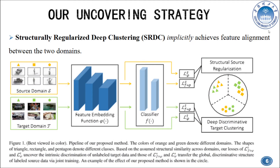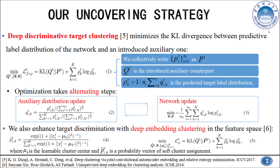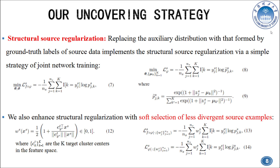We constrain the clustering solutions using structural source regularization that leverages the structural domain similarity assumption. This is the pipeline of our proposed method. It is very simple but effective. Technically, we use a flexible framework of deep network-based discriminative clustering that minimizes the KL divergence between the predictive label distribution of the network and an auxiliary one. The auxiliary distribution not only avoids degenerate solutions, but also encourages cluster size balance while respecting the underlying data distributions. The optimization takes alternating steps. We also enhance target discrimination with deep embedding clustering in the feature space. Replacing the auxiliary distribution with data formed by ground-truth neighbors of source data implements the structural source regularization with a simple strategy of joint network training.